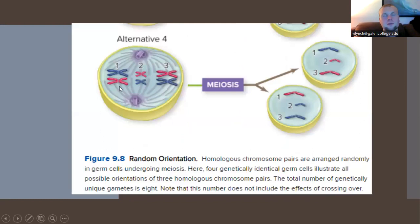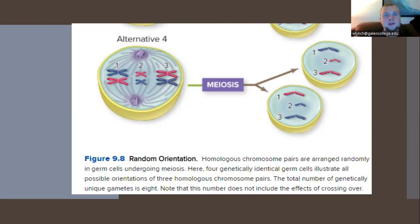A fourth alternative has two chromosomes flipping over, making the result even more genetically unique. Homologous chromosome pairs are arranged randomly, so the four genetically different germ cells illustrate all possible orientations of three homologous pair combinations. The total number of genetically unique gametes is eight — we have four alternative pathways, four cells identical to parents and eight that are heterogeneous with unique chromosome alignments.